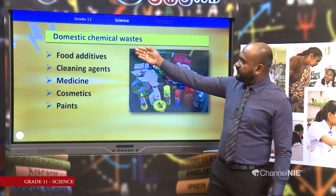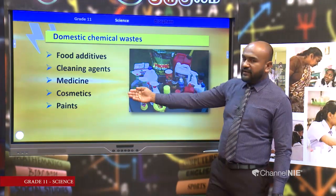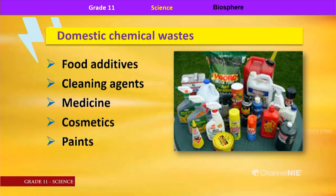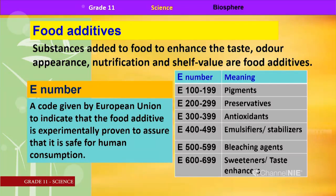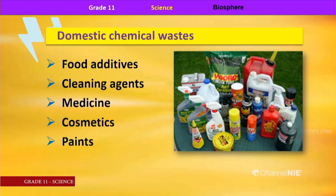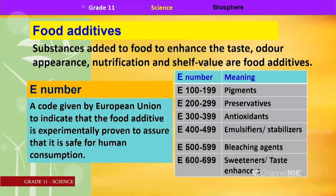There are also other domestic-related pollutants — food additives, cleaning agents, medicine, cosmetics, and paints. Food additives are substances added to food to enhance taste, odour, appearance, nutritional value, and shelf life. Food additives come with an E number nowadays — that is a European standard. There are different ranges of E numbers, each with a meaning, and this knowledge is really important for our life situations.